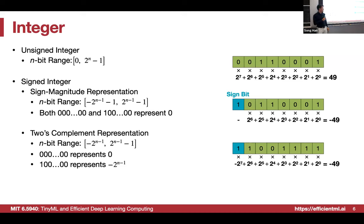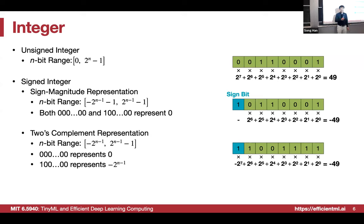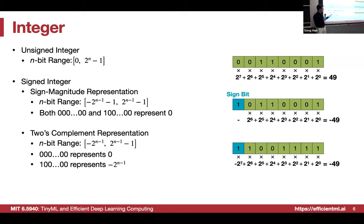To deal with that wasted slot, we have two's complement representation. The first bit is no longer the sign bit — it indicates minus 2 to the power of the largest position. So if the first bit is 1, it's still a negative number, but the representation uses this equation. All zeros represent 0, and 1 followed by all zeros represents the smallest value: minus 2 to the power of n minus 1.